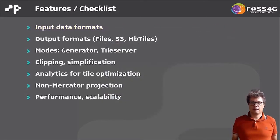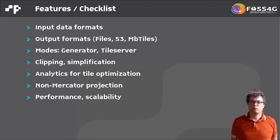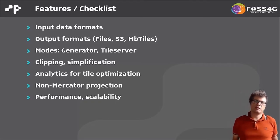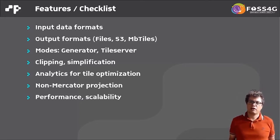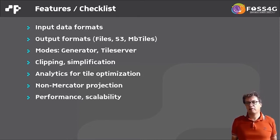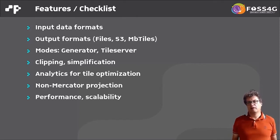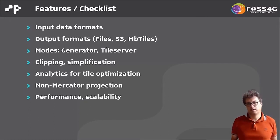The features I'm looking at are also a checklist for selecting software. We look at supported input data formats, supported output data formats — files, MBTiles — and then there are two modes: a generator mode with a command line interface that generates all tiles as files or S3 buckets, and a tile server mode which is a web server mode delivering tiles on request.